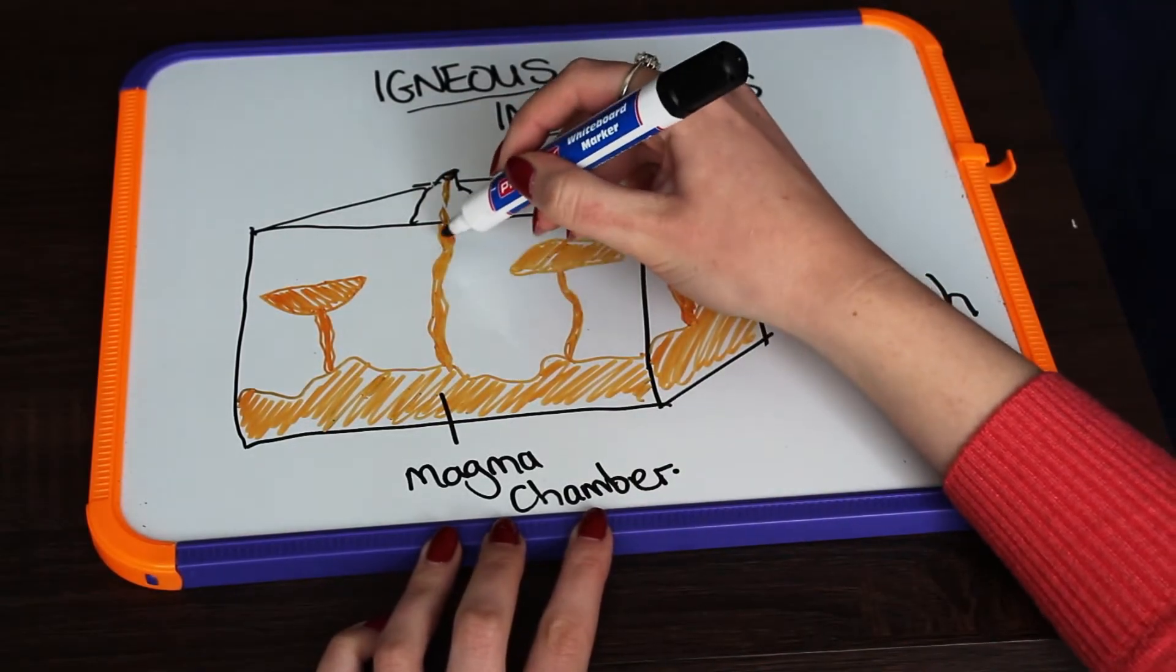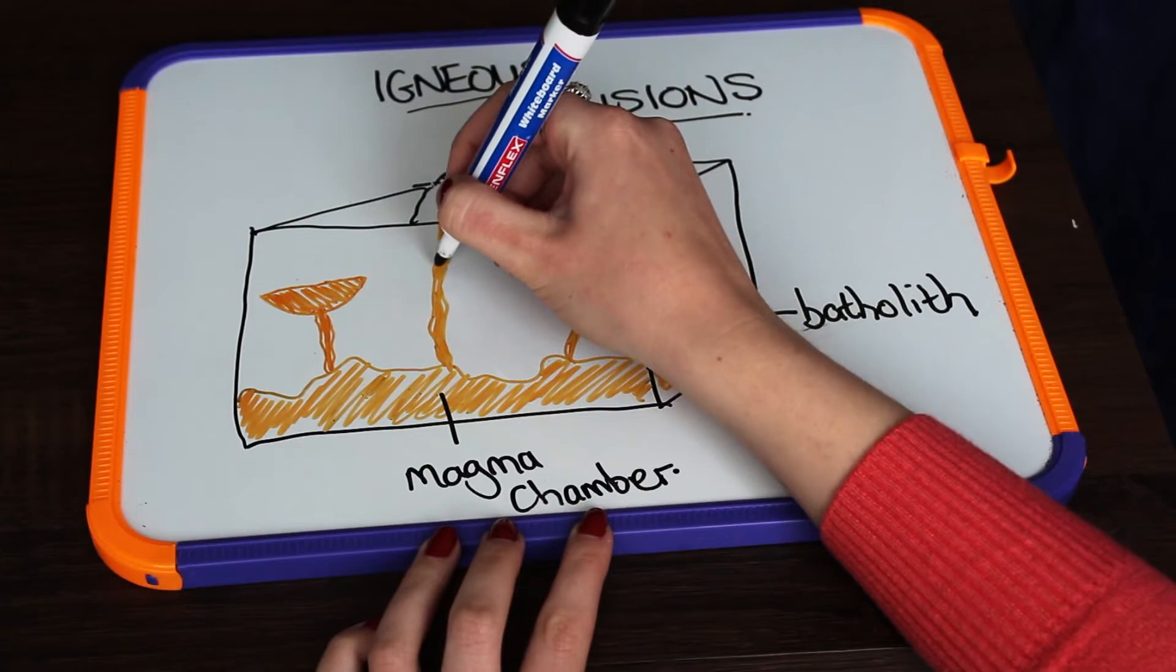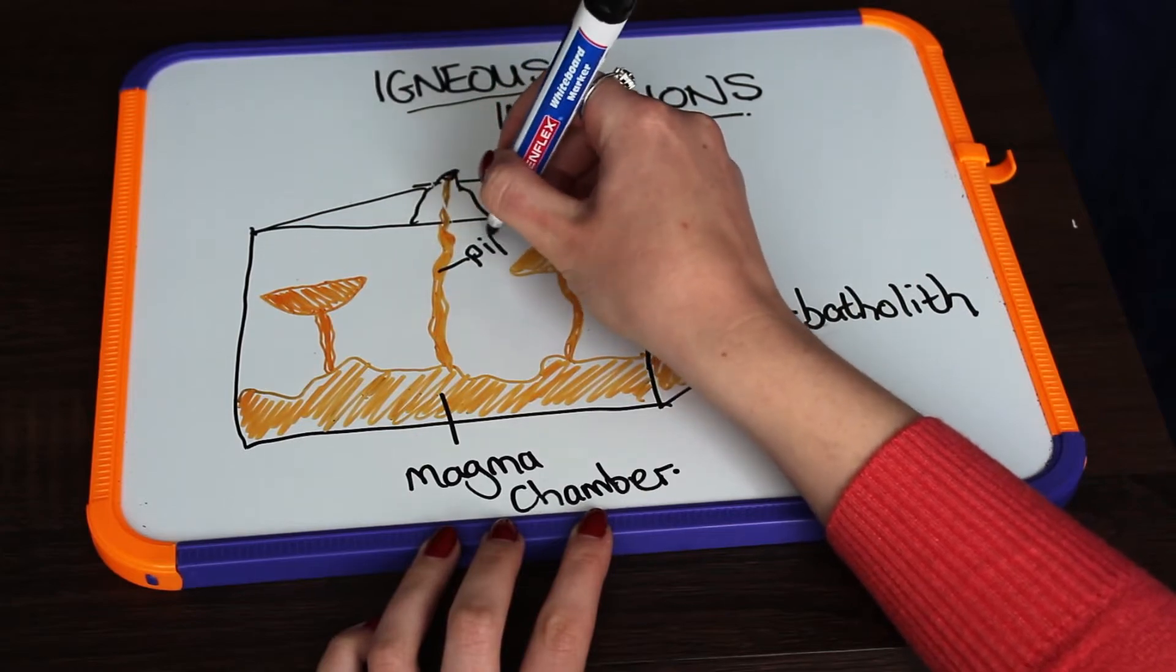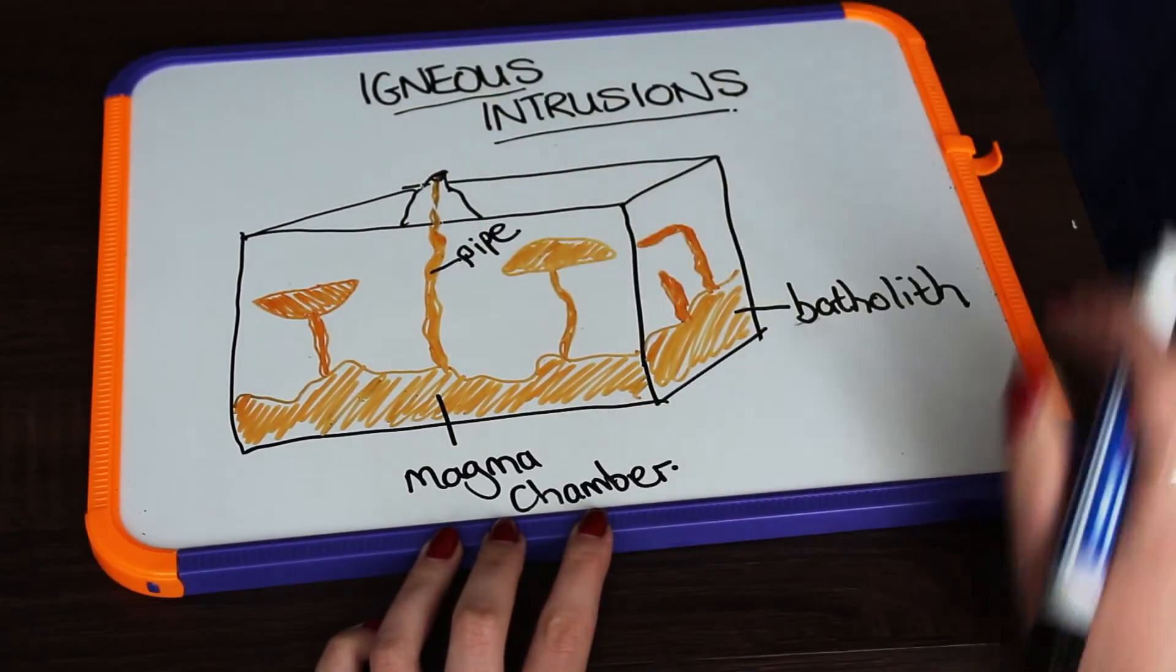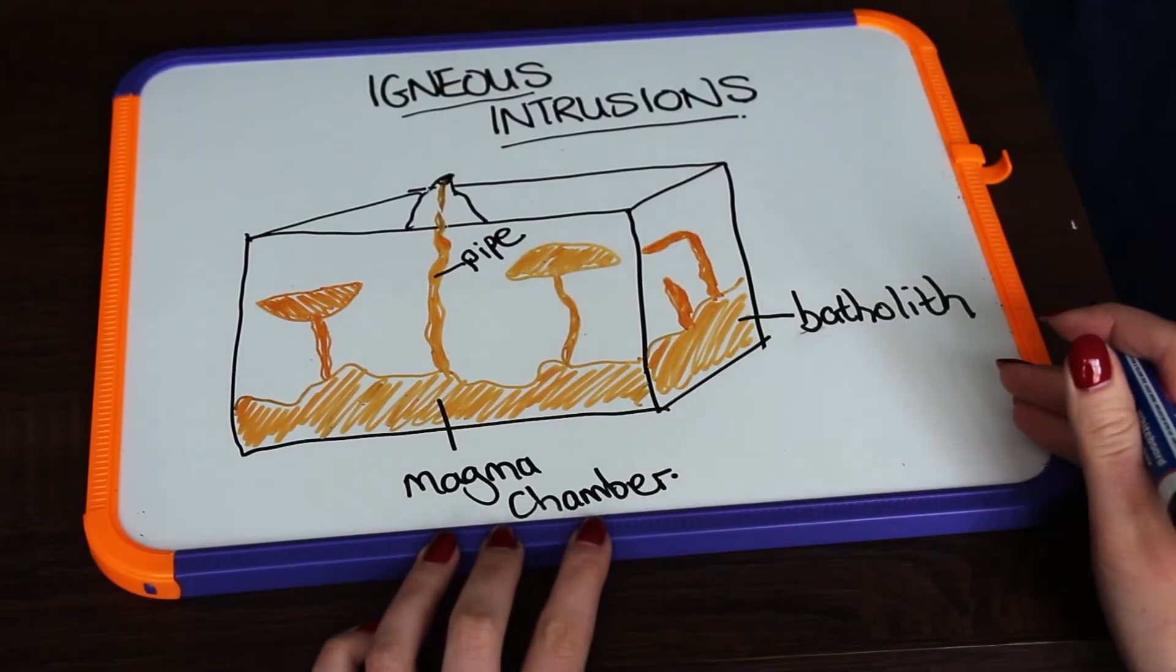This vertical igneous intrusion would be called a pipe, and because it is connected to a volcano, we could also call it a volcanic pipe.